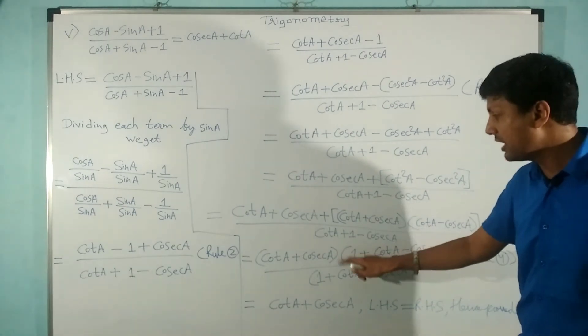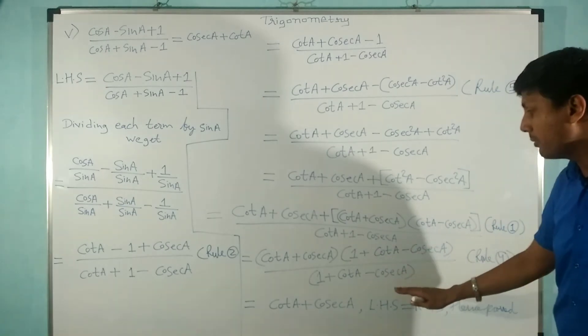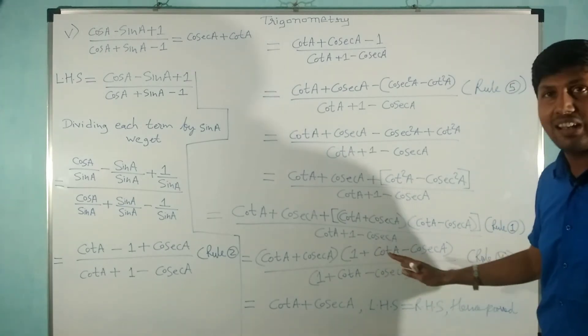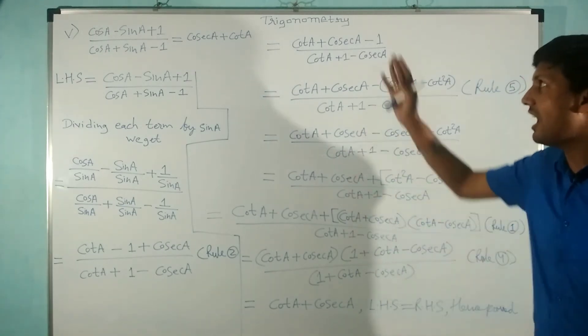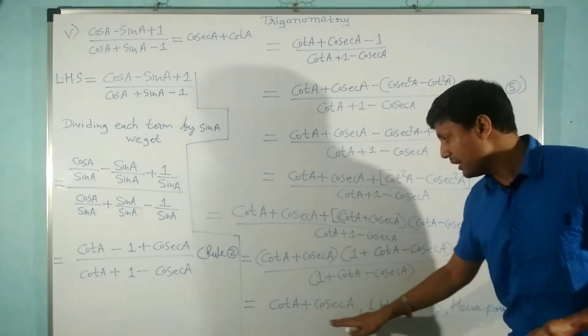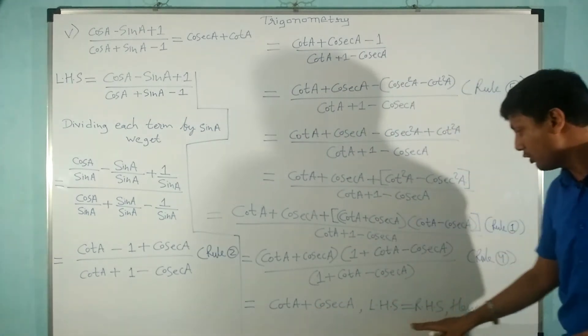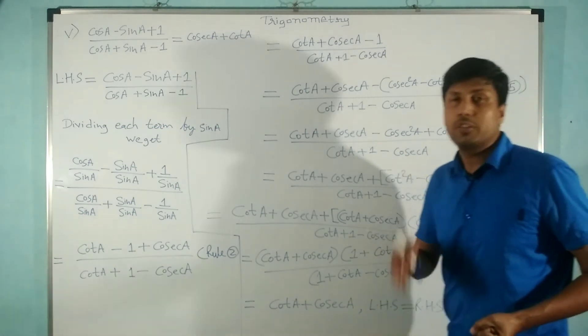These brackets will get cancelled because they are in multiplication, so directly both brackets will get cancelled and what remains is our RHS—that is cot A + cosec A. So LHS is equal to RHS and hence proved.